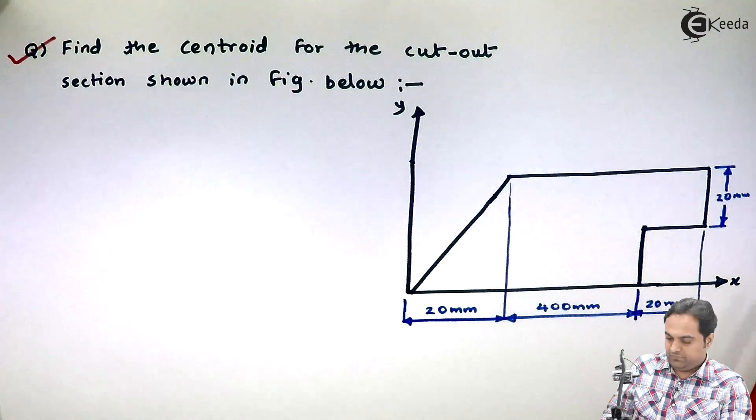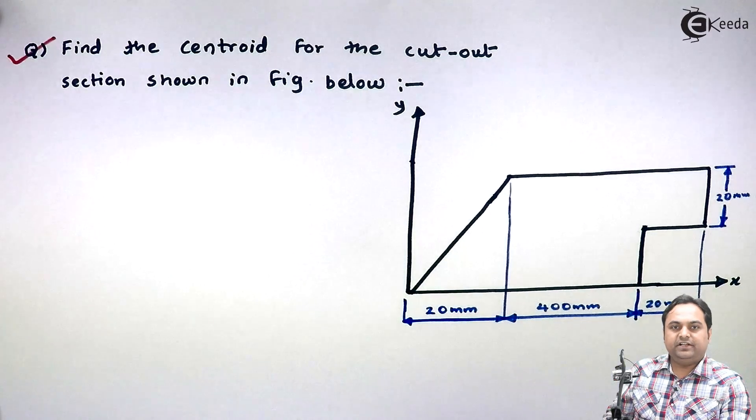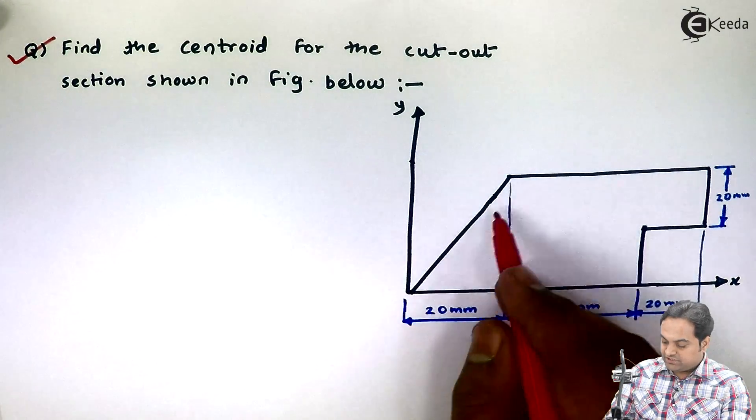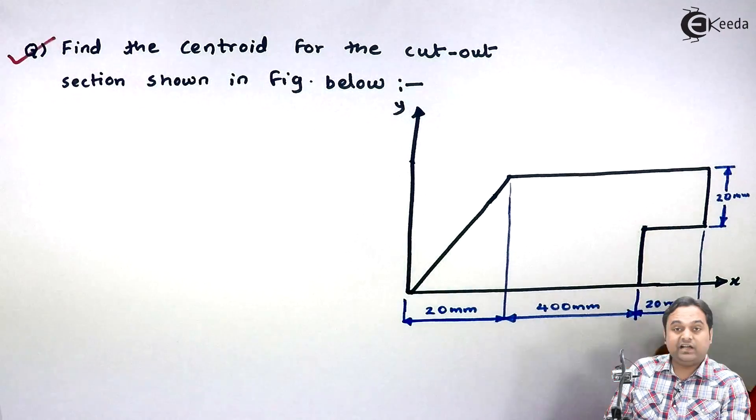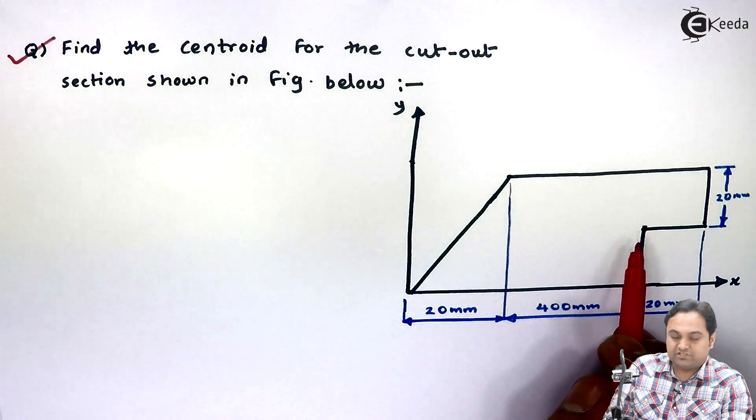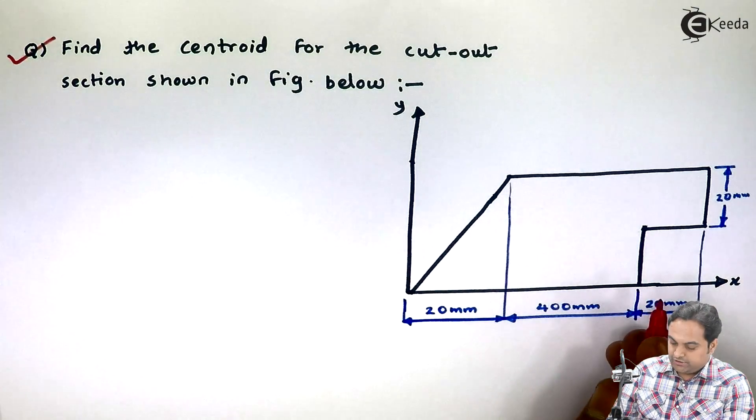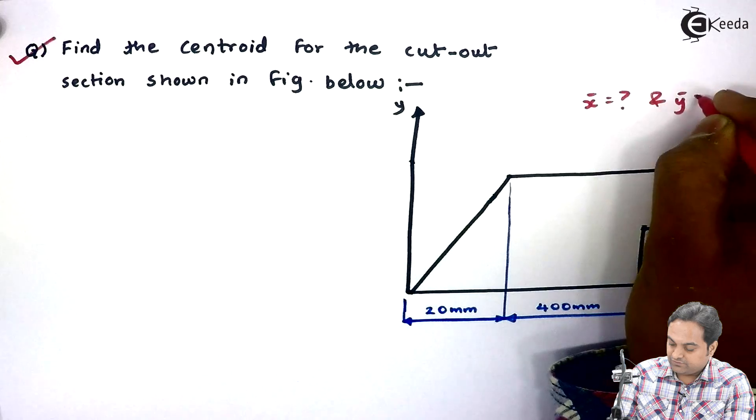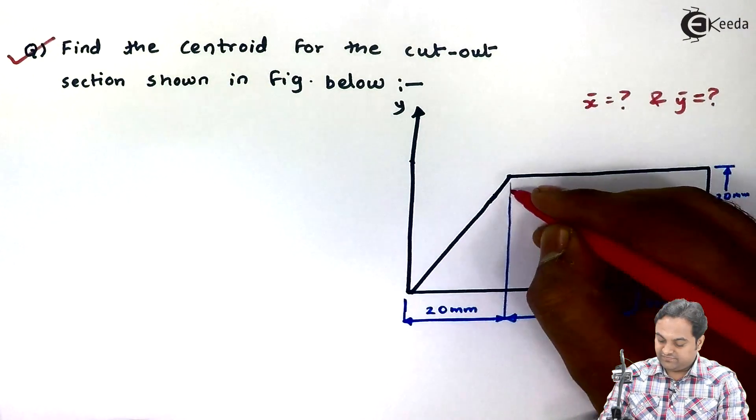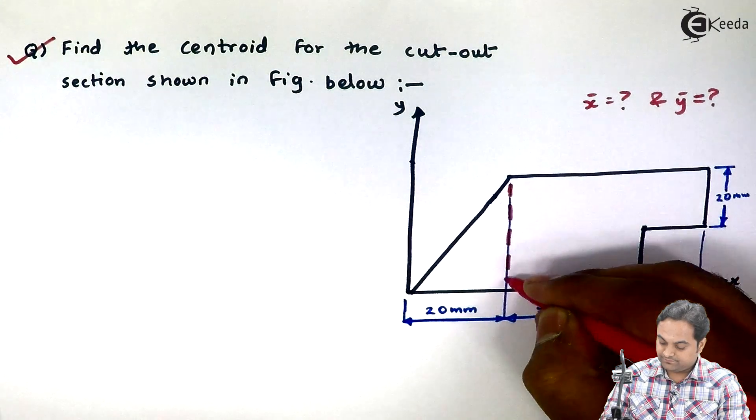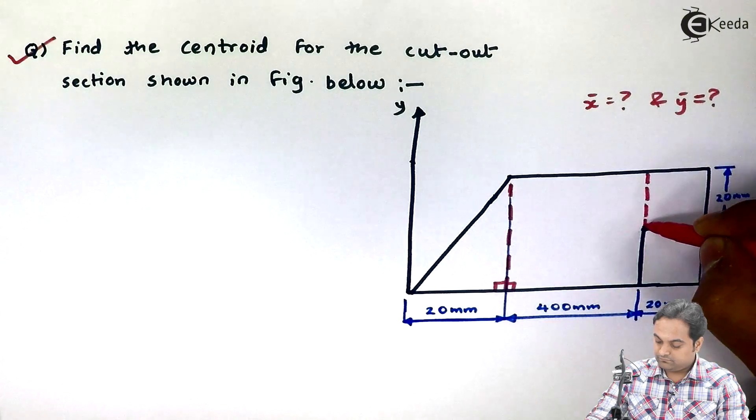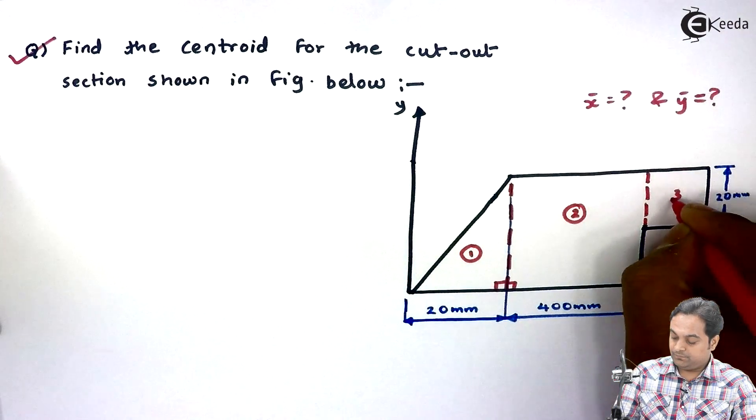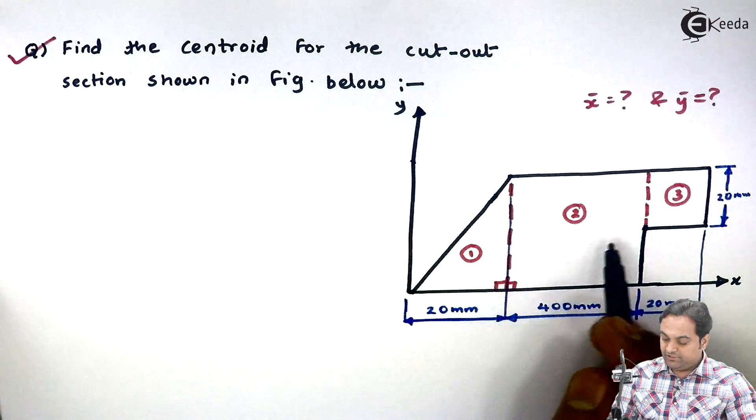So in the solution part, for such kind of figure we would be dividing it into simple figures like triangle, rectangle, etc. Now the figure which is given here is uneven or we can say unsymmetric. It is not symmetric about x or y axis. Since we have to locate the centroid, we need to find out x bar and y bar values. I will divide this figure into simple diagrams. So here will be section 1, section 2, and section 3.